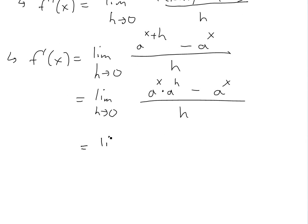Again, you could simplify this. For a^h, you could take the a^x out, so you'll get a^x bracket a^h minus one over h.